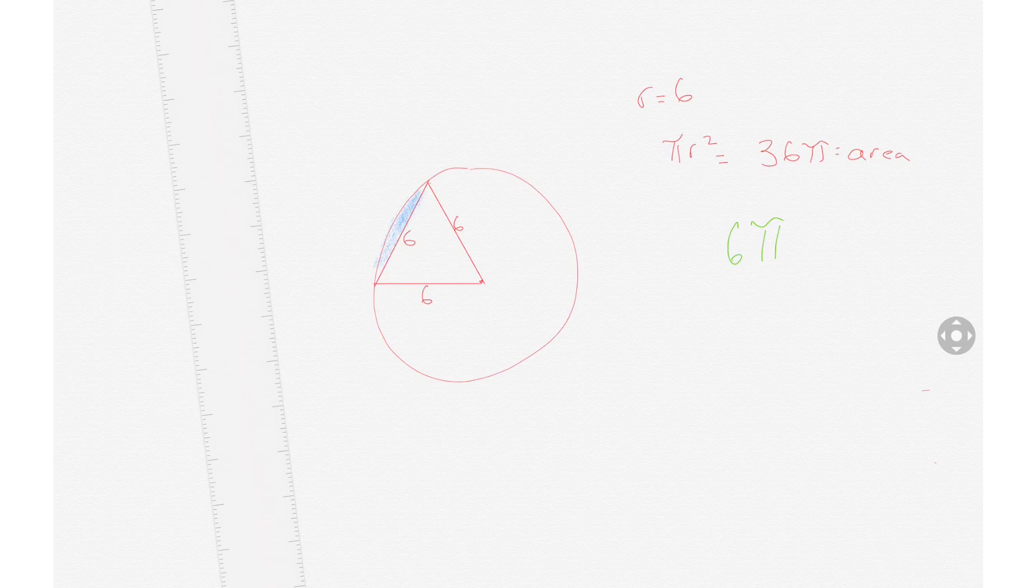To get the area of that shaded area, we now have to subtract the area of the section, which is 6 pi, by the area of the equilateral triangle. So we have to calculate the area of the equilateral triangle.